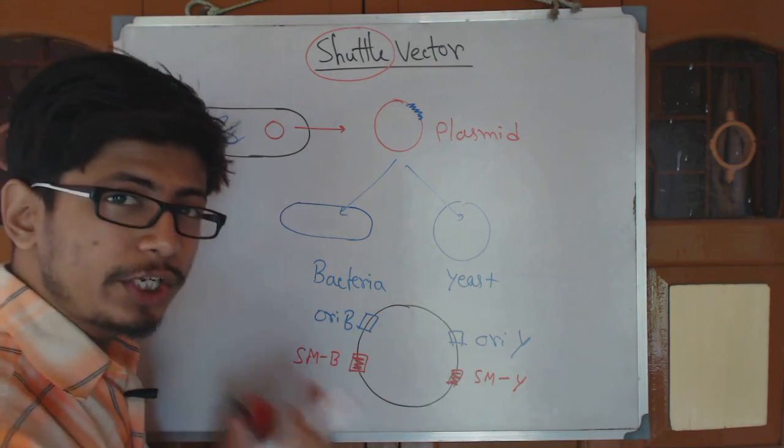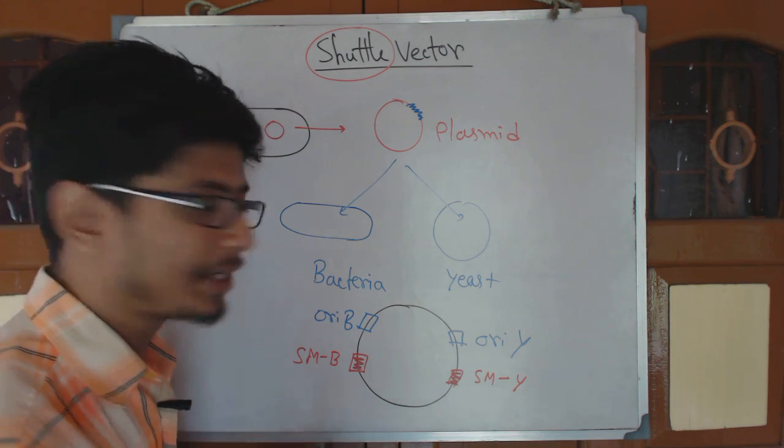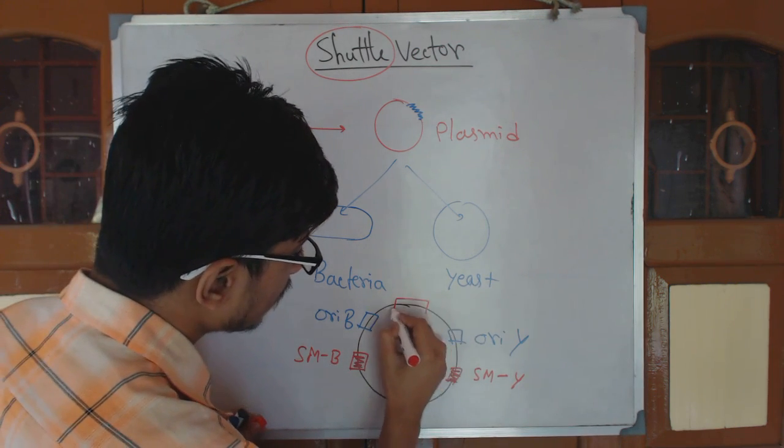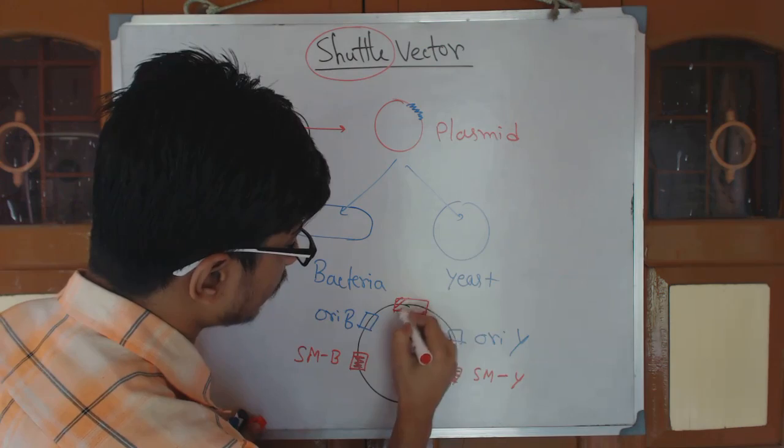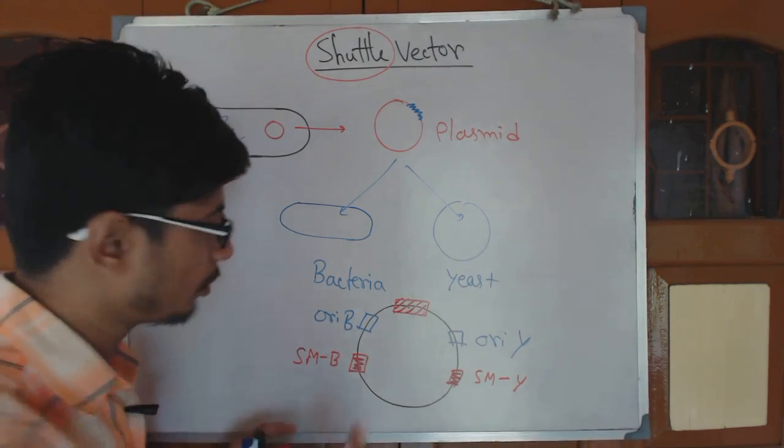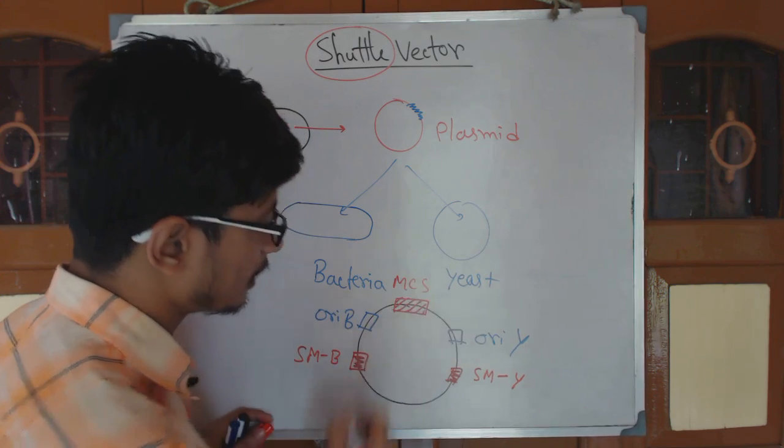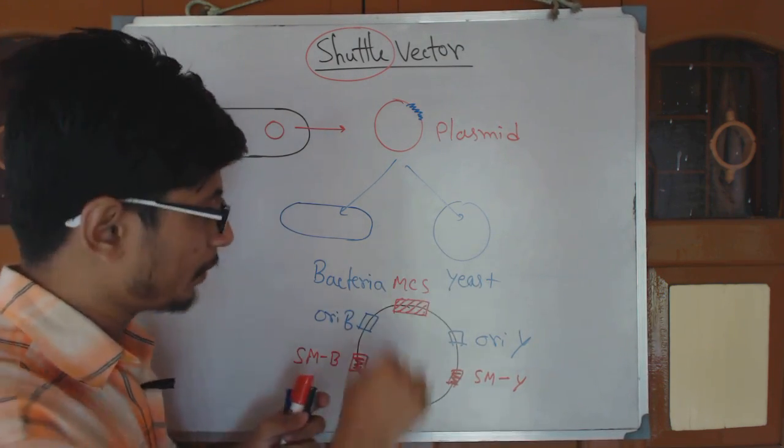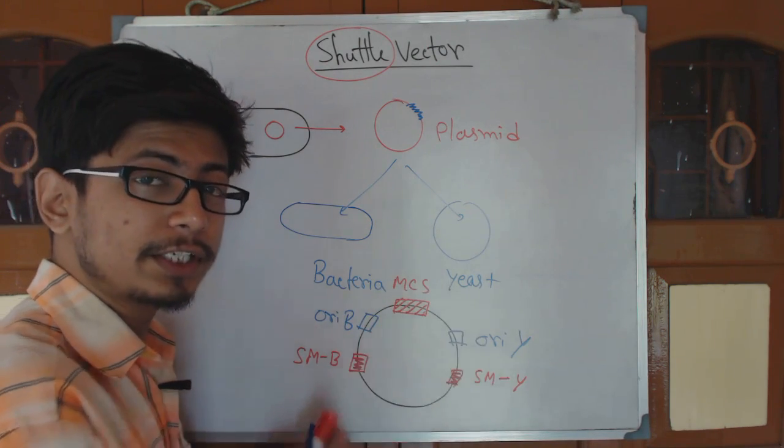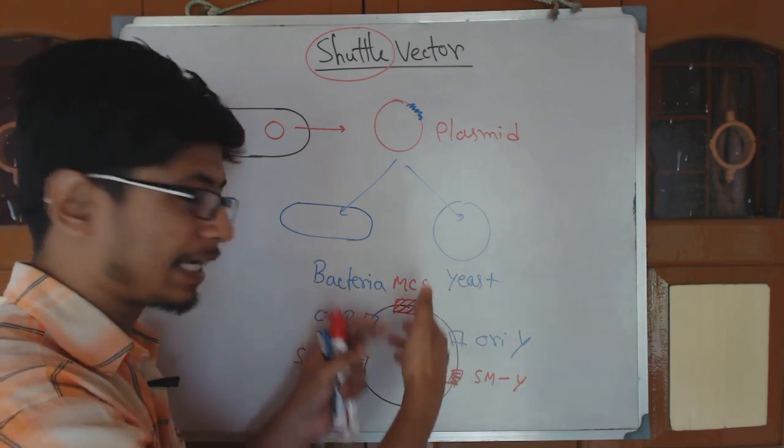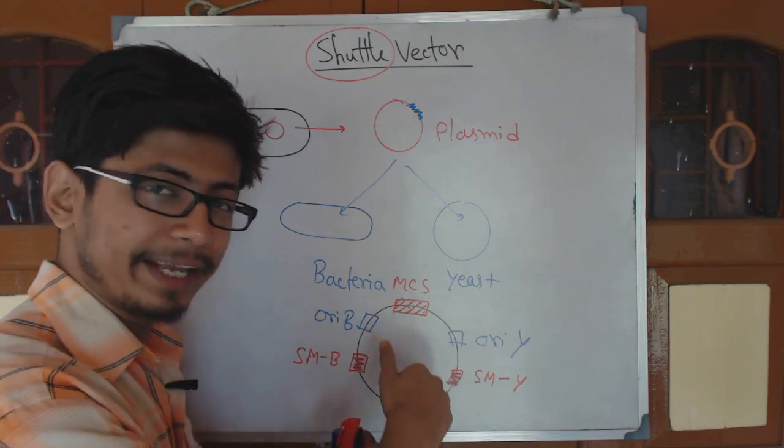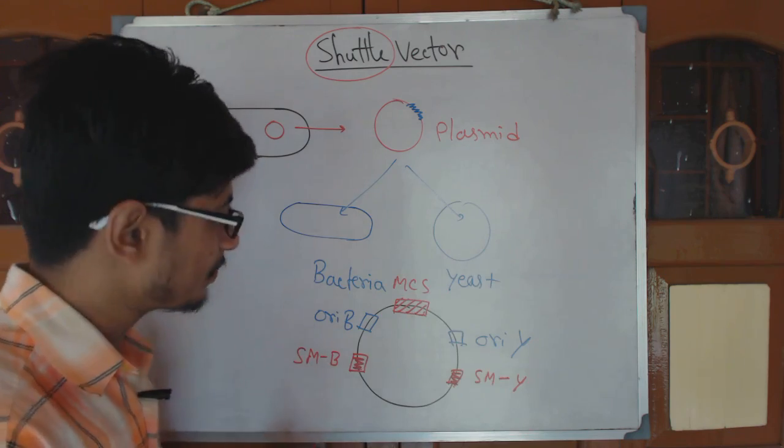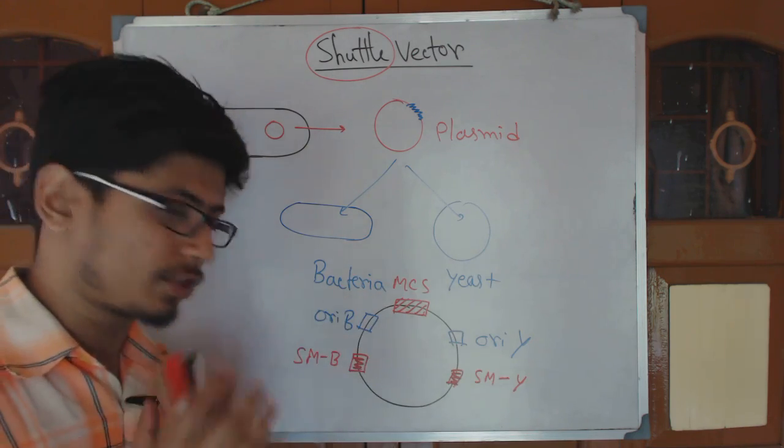Now alongside we should have multiple cloning site and that thing is common because it does not matter where exactly you put the DNA here. So we have a multiple cloning site there. That is common for all because there will be different restriction enzyme sequences where we can treat the enzyme and cleave it and attach the target DNA. And we can do the rest of the process. So this is a basic construct.